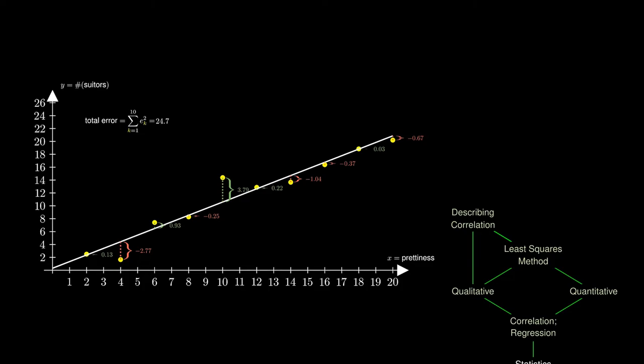Furthermore, it's also possible to find a number that summarizes the degree of the correlation between the prettiness of a young woman and the number of suitors. This is known as the correlation coefficient denoted by r, and in this case it has the value 0.96632. This number is relatively close to 1, and we can say that the linear correlation is strongly positive.